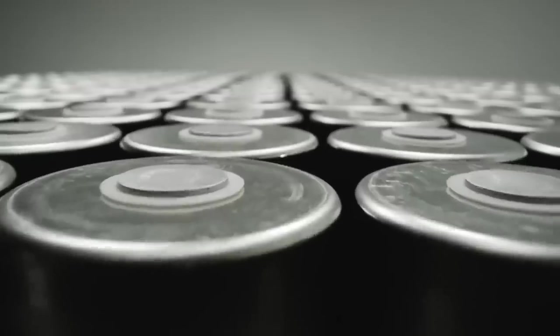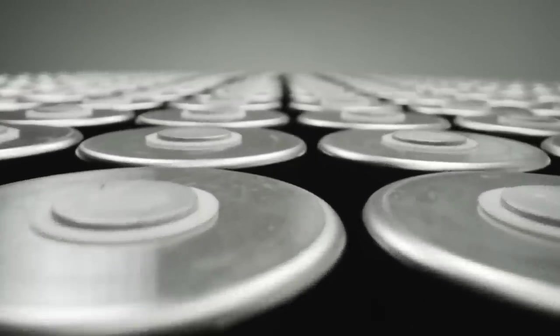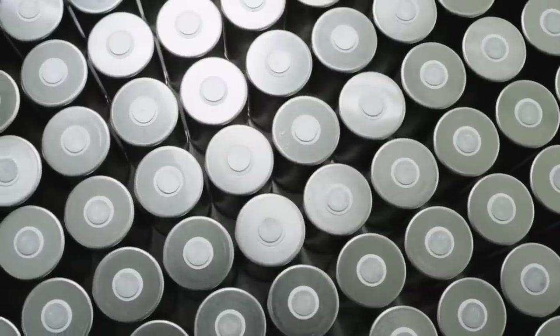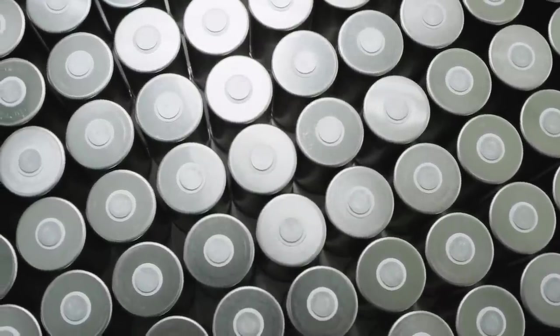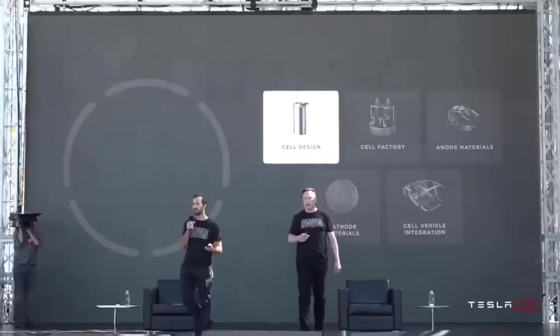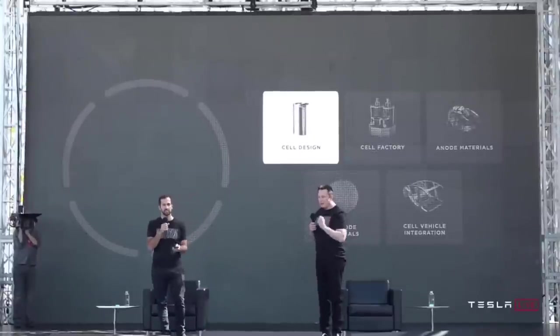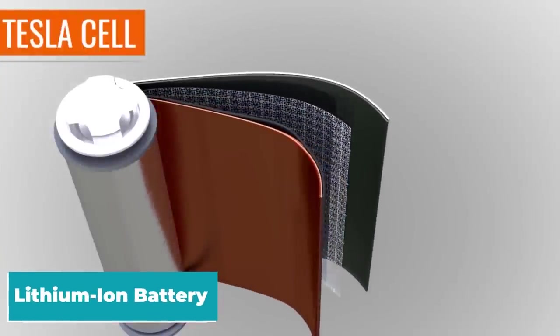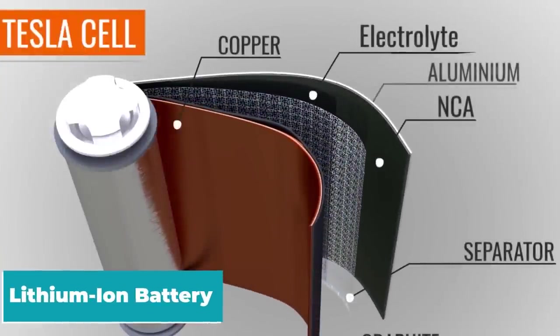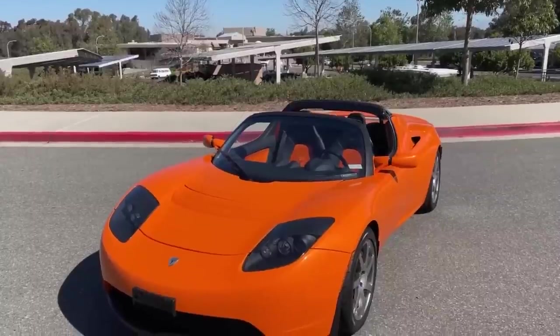Tesla has become a powerhouse in the battery industry as it designs its own batteries and sometimes teams up with other companies to produce them. However, the search is always on for the best battery materials. Basically, all modern electric cars use the lithium-ion battery, which Tesla actually made popular with its first EV, the Roadster.